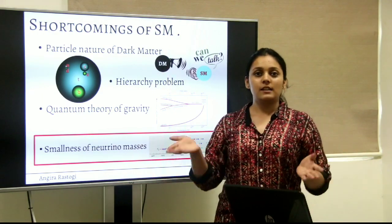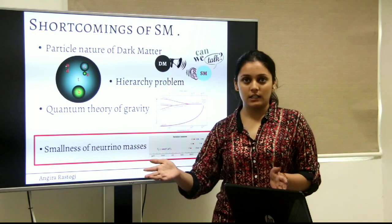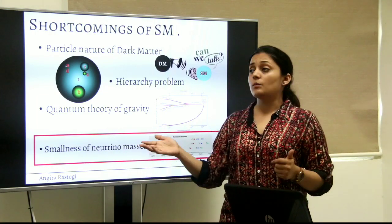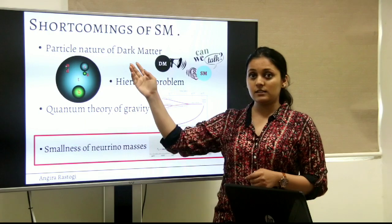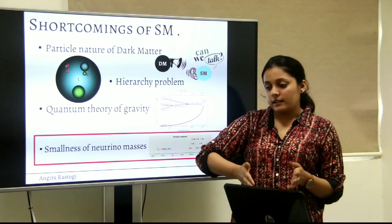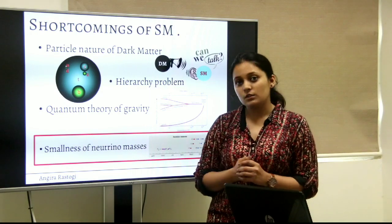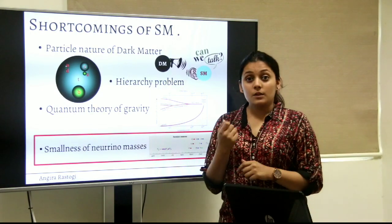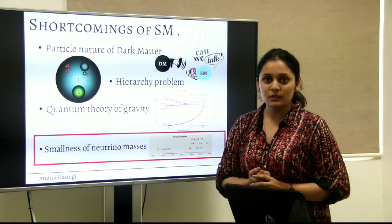Then there are so many particles and they are placed in three different generations depending on their masses. Some of them have very huge masses, some of them are tiny and we do not know what is the reason of this striking hierarchy of masses. There should be some explanation. What about gravity?